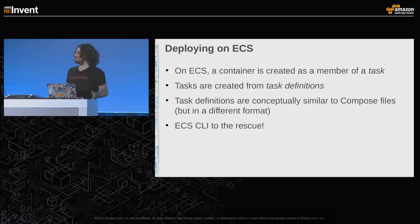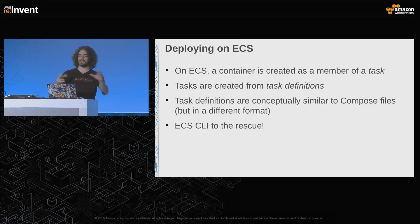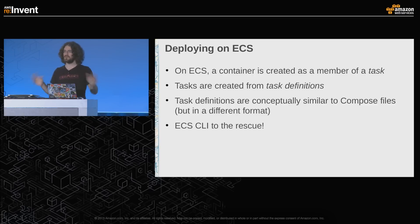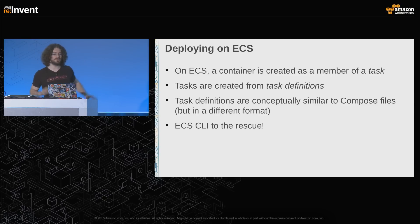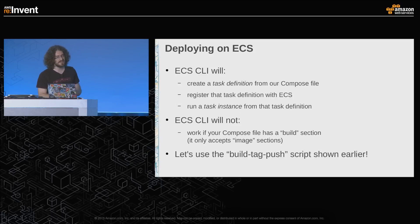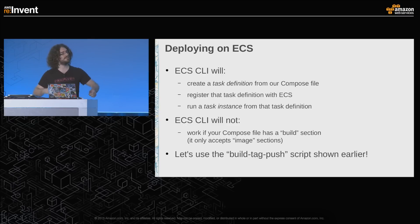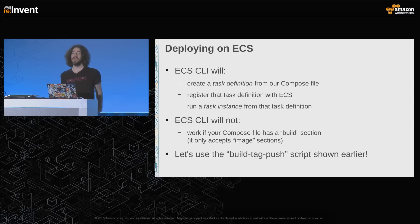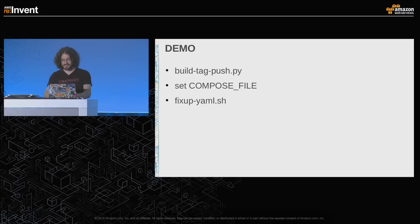I want to deploy this on ECS and scale it. Some ECS 101: on ECS, a container is a member of a task, and tasks are created from task definitions. Task definitions look conceptually similar to Compose files, though not the same format. The ECS CLI takes the Compose file, turns it into a task definition, registers it with ECS, and tells ECS to run instances of that task definition. However, the ECS CLI will not accept build sections — so we use the build-tag-push script to get a Compose file that ECS can handle.